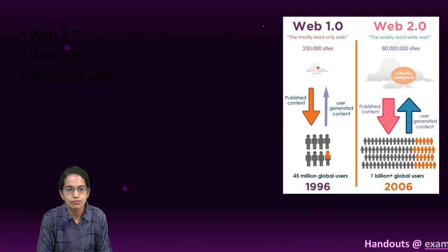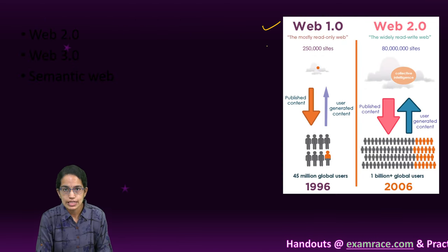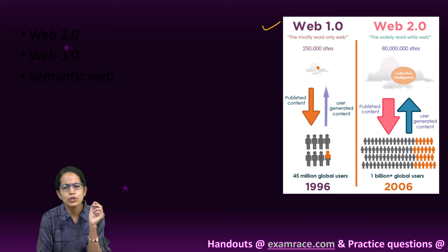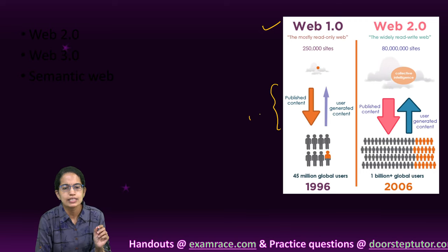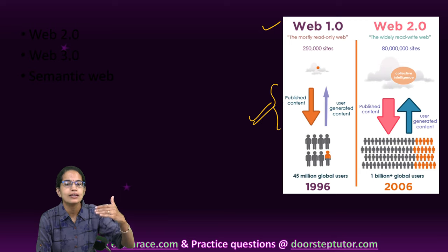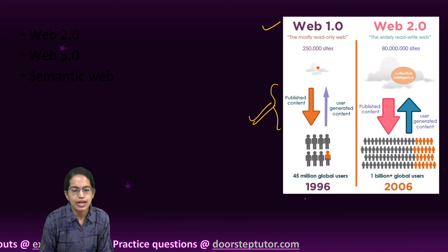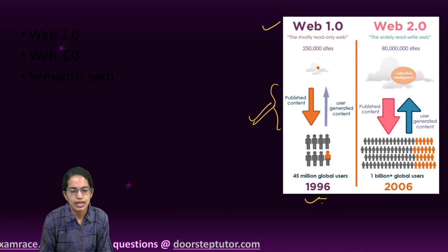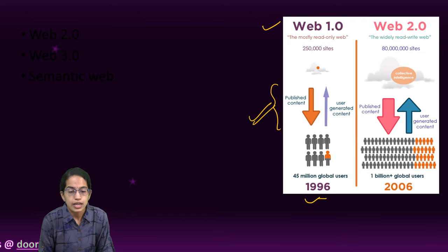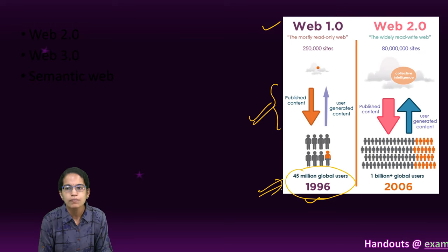Web 1.0 is mostly a read-only web with very few user-generated content. It is mainly the published content by organizations. In 1996, this was the predominant thing in the internet market and there were nearly 45 million global users.